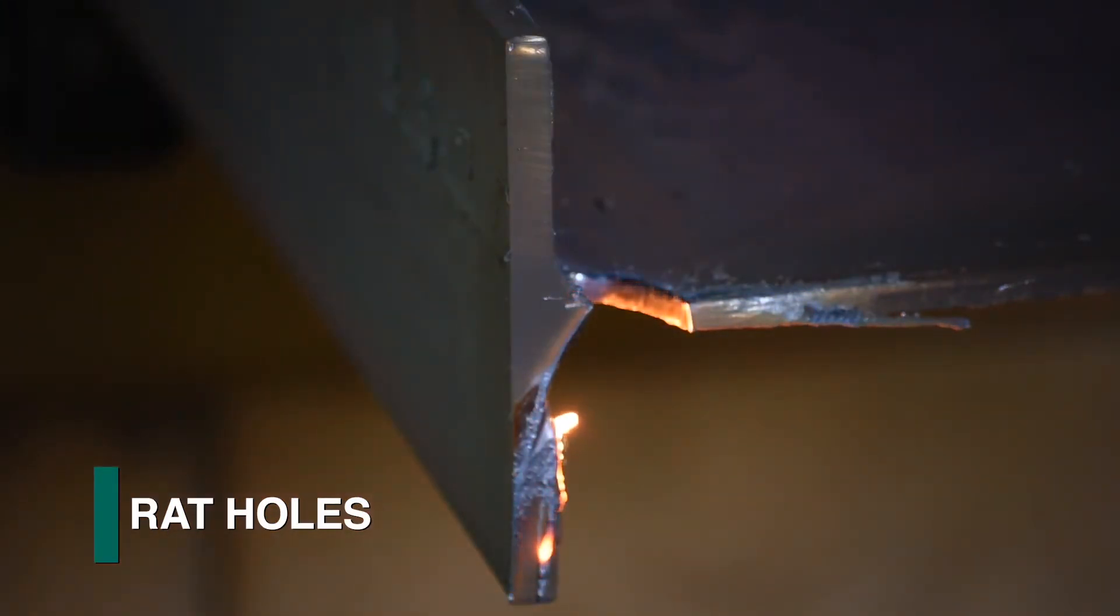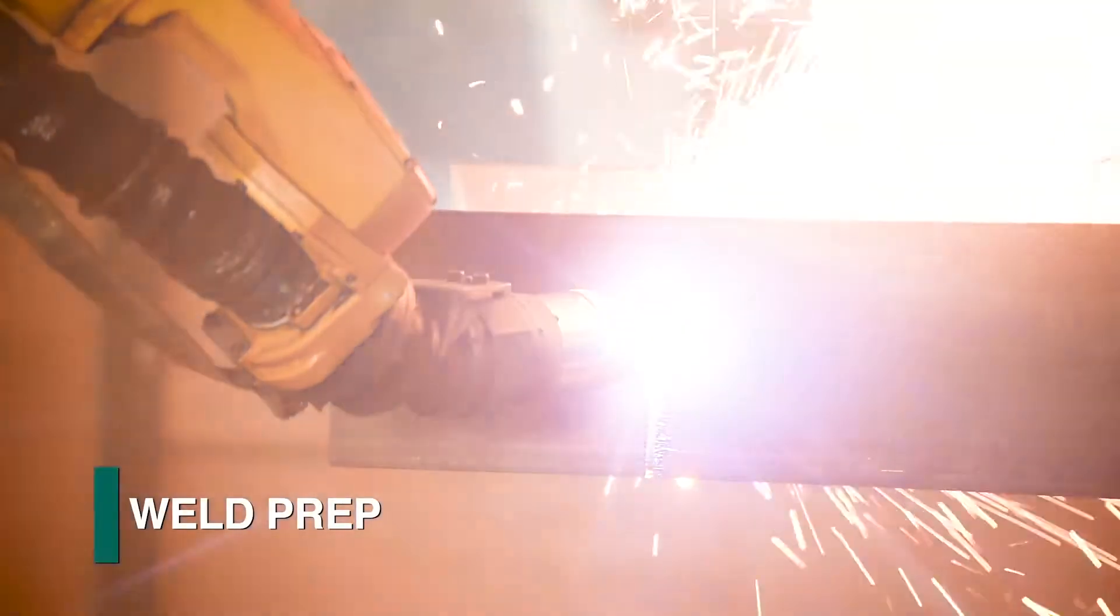Tipping the torch to get closer to the flange can even generate rat holes. The weld prep on the flanges can be executed with plasma in a fraction of the time.